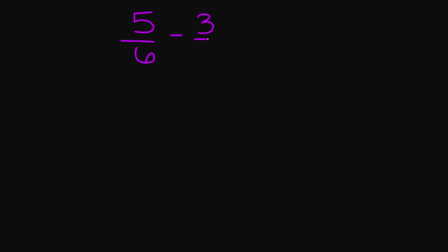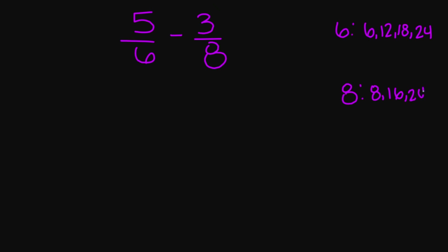5 over 6 minus 3 over 8. My denominators are not the same, so I do need to find a common denominator. We're going to list the multiples of 6 and 8. For 6: 6, 12, 18, 24. For 8: 8, 16, 24, 32. My lowest common multiple between 6 and 8 is 24.